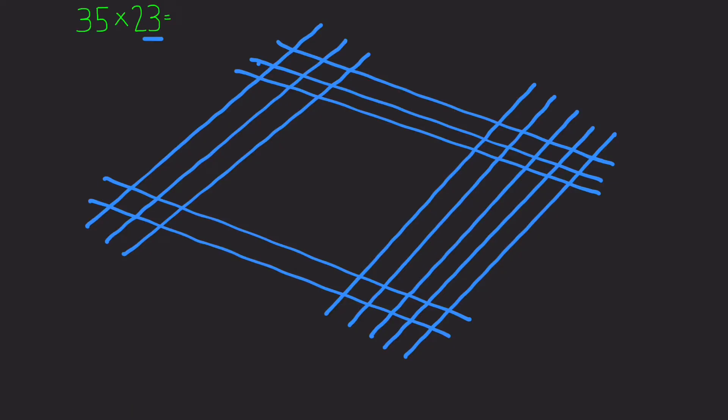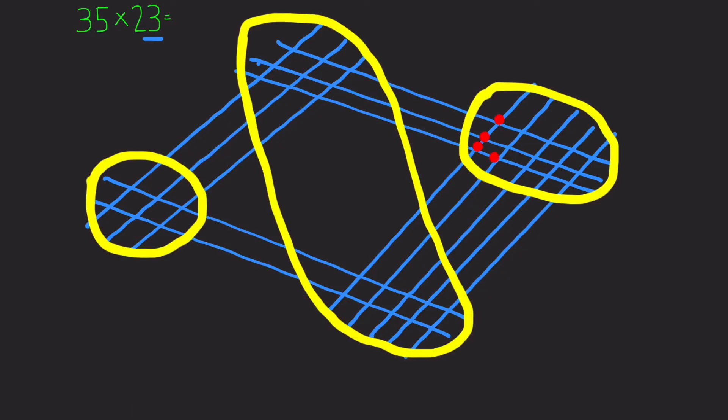And then we circle the zones and count the dots like we did. 1, 2, 3, 4, 5, 6, 7, 8, 9, 10, 11, 12, 13, 14, 15. Now in this example, because we have two digits, we carry the one across to the middle.